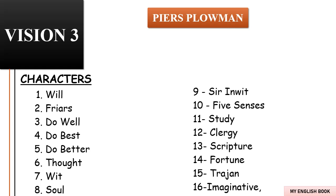Wit then introduces Will to his wife Study, who is openly suspicious of Will, thinking he wants to learn for the wrong reasons. Study gives her own explanation of Do Well, which proves so hard to follow that even her own husband feels confused. Study sends Will to her cousin Clergy and his wife Scripture, who can possibly explain Do Well in a way Will can understand. Will listens to Clergy and Scripture's explanation of Do Well, Do Better, and Do Best, and at this point Will falls into a dream within a dream — a new narrative technique begins.